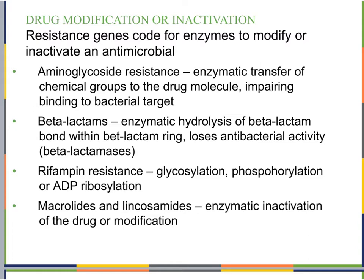The first mechanism is drug modification or inactivation. If bacteria have resistance genes, those genes code for enzymes to modify or inactivate an antimicrobial. What these genes do is code for an enzyme that goes over the antimicrobial chemical and modifies it by adding something to it, or inactivates it by breaking it apart. Bacteria have actually developed whole enzymes just meant to resist our antimicrobials — and remember, these were originally made by bacteria competing in nature.